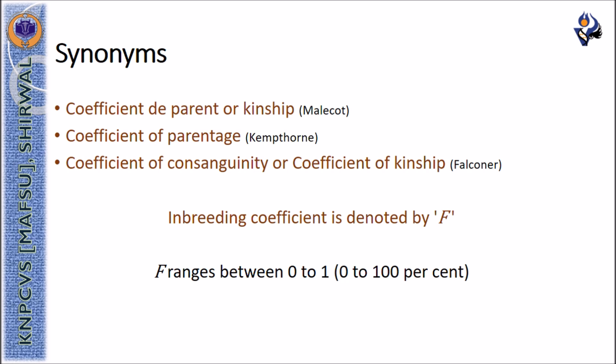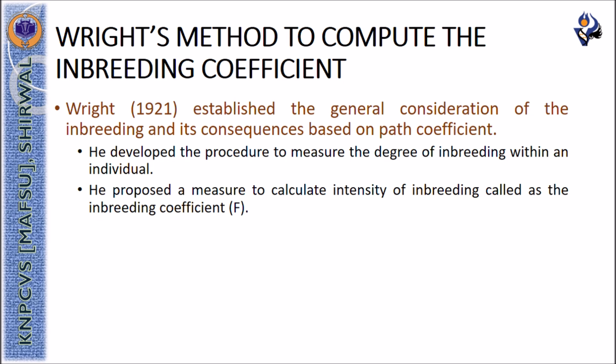The inbreeding coefficient has various synonyms. It is denoted by the letter capital F and ranges between 0 and 1. Seymour Wright devised a method to compute the inbreeding coefficient, developing a procedure to measure the degree of inbreeding within an individual using path coefficients.